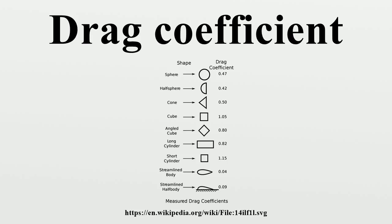When drag is dominated by a frictional component, the body is called a streamlined body, whereas in the case of dominant pressure drag, the body is called a bluff body. The shape of the body and the angle of attack determine the type of drag. An airfoil with a small angle of attack has attached boundary layers, which produce much less pressure drag, so drag is dominated by the friction component and the body is described as streamlined. For bodies with fluid flow at high angles of attack, boundary layer separation takes place due to adverse pressure gradients, leading to wake formation, eddy formation, and pressure loss. In such situations, the airfoil is stalled with higher pressure drag than friction drag, and the body is described as a bluff body.